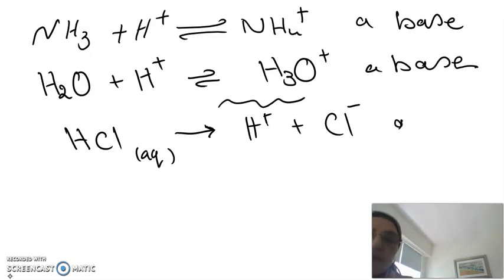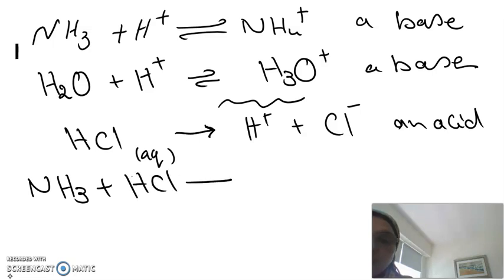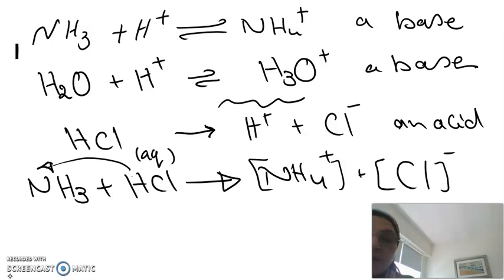Here, it's an acid because it donates a proton. If a reaction happens between an acid and a base, like ammonia and HCl, the proton will be donated from the acid and accepted by the base, giving NH4+ and chloride negative ion.